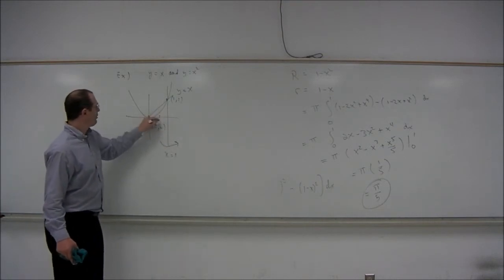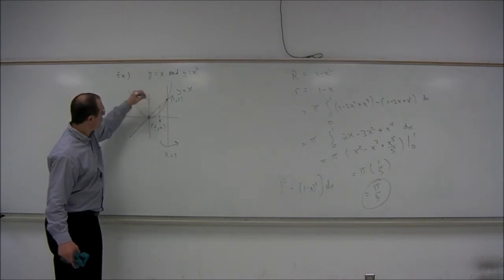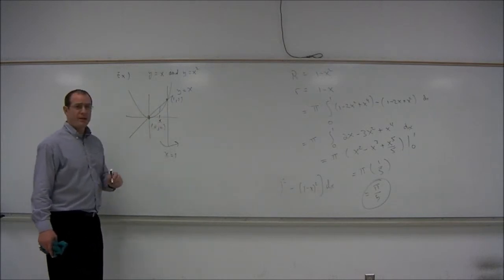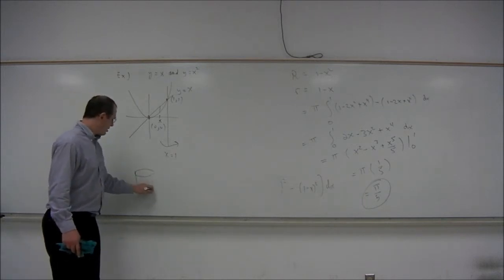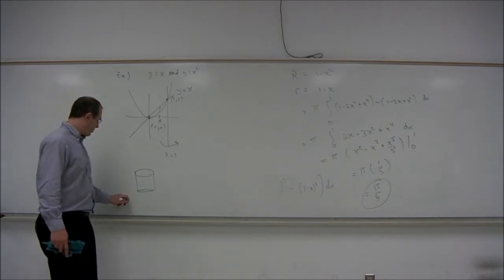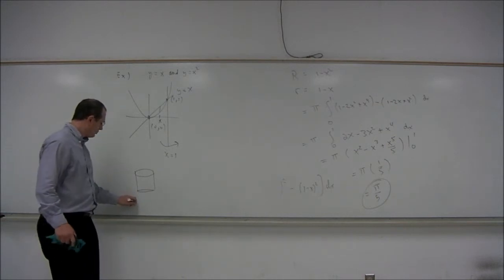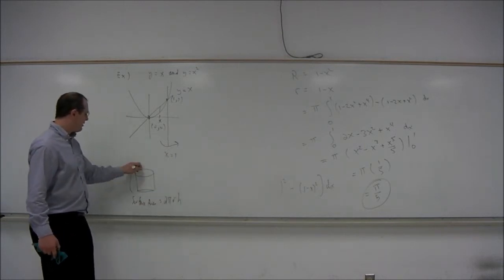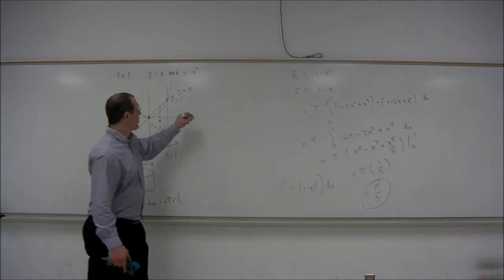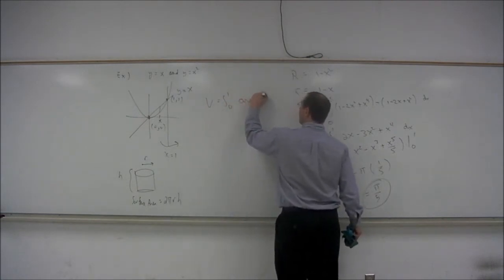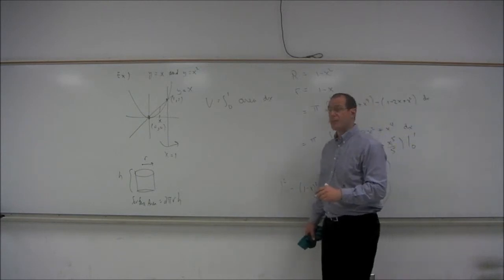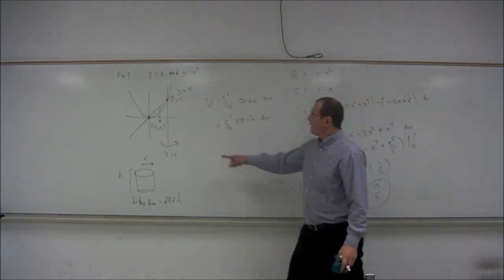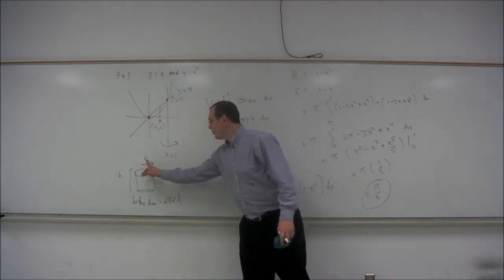We'll take a value of x between 0 and 1 and make a vertical slice in the region at that particular x value. Now we will revolve that slice around the vertical line, and what we get is the lateral surface of a cylinder. The lateral surface area of the cylinder is 2 pi times the radius times the height — where the cylinder has height h and radius r.